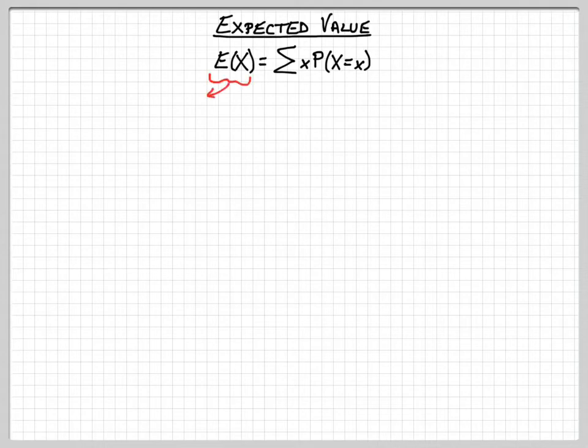So E(X), this is basically us saying that we're looking for the expected value of some random variable which we label as capital X. So it could be a random variable that we label as capital T, as capital Z, it could be any capital letter, but we tend to label our random variable as a capital letter.